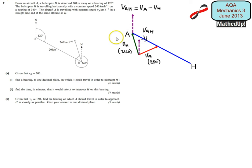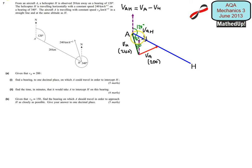We know that the velocity of H has a bearing of 340 degrees, so this angle here is 340, which means this angle is 20 degrees. We know the bearing to H is 120 degrees, so this angle here is 120 degrees. Because that's 20, this whole angle here needs to be 160 degrees — because they add up to 180 — so this part of the angle is 40 degrees. I now know this angle here is 40 degrees, and I'm going to call this angle alpha.